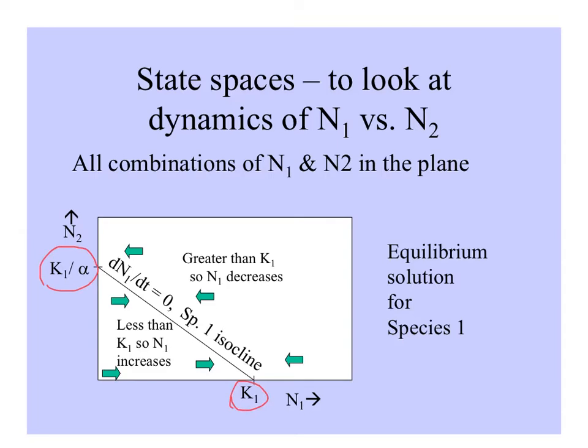If the numbers of species 1 are greater — above the isocline — species 1 will decrease. If they're under or less than the isocline, it's less than the carrying capacity, so it will increase.